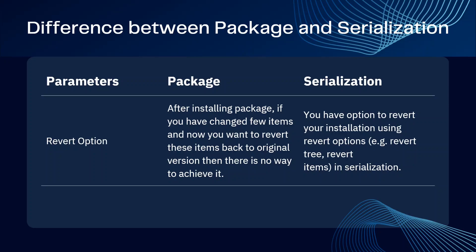For Serialization, you have the option to revert your installation using the revert option — for example, revert tree or revert items. So in packages, if you have installed any package, there is no way to revert those changes. But in serialization, we have the option to either revert the tree or revert items.